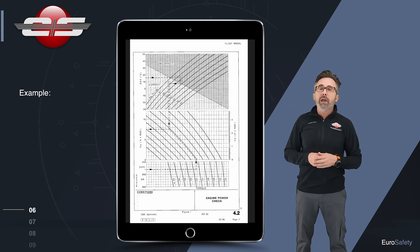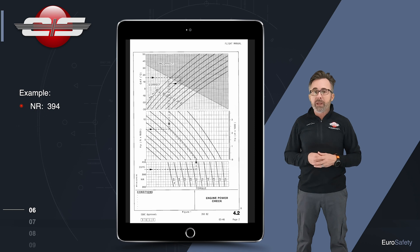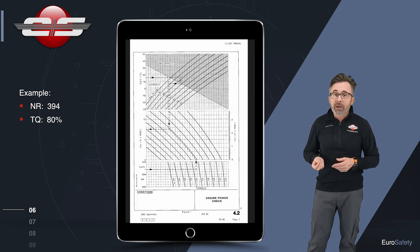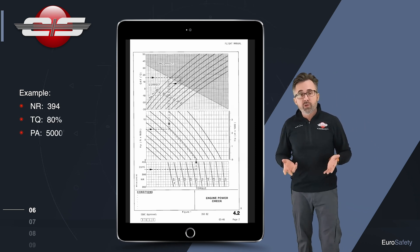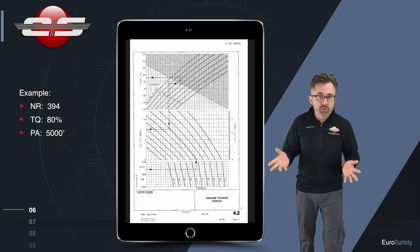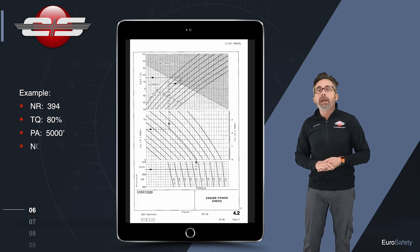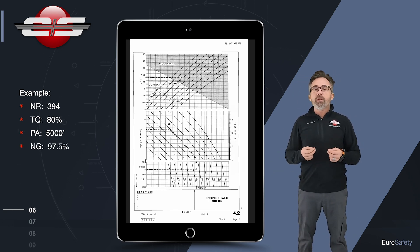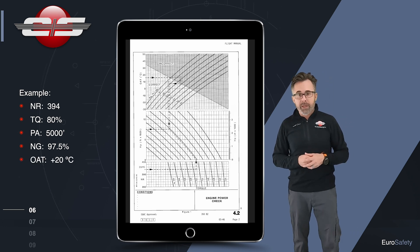So in our example, we're going to have a 394 rotor rpm, a torque of 80%, we'll have a pressure altitude of 5,000 feet, 29.92 in your Kollsman window, an NG value of 97.5%, and an outside air temperature of +20°C.